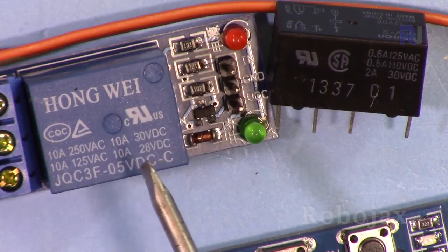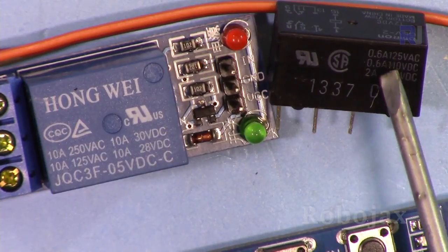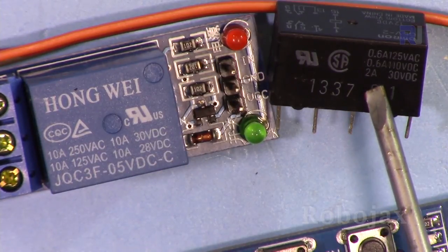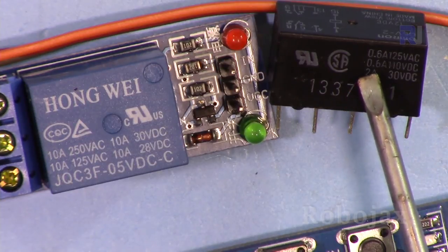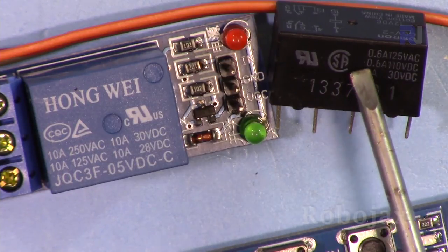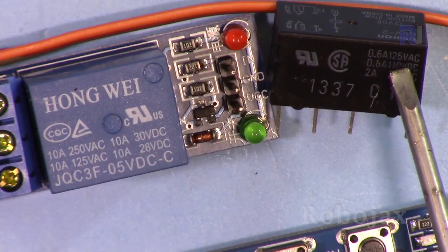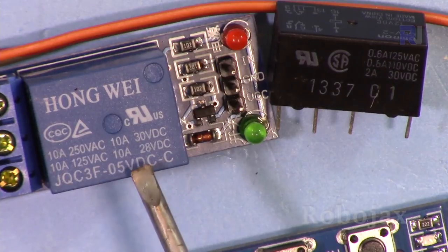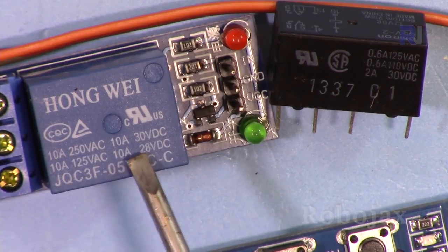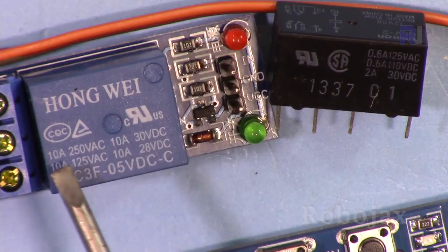When using a relay, pay attention to the current rating. For example, this is a very tiny relay with current rating of 2 amperes for 30 volts, 0.5 amperes for 100 volts, and 0.6 amperes for 125 volts. This is the amount of current that it can handle.